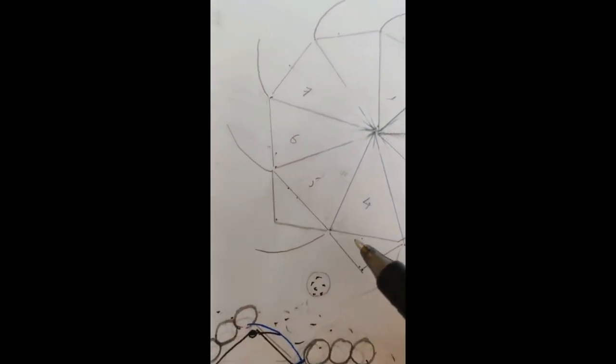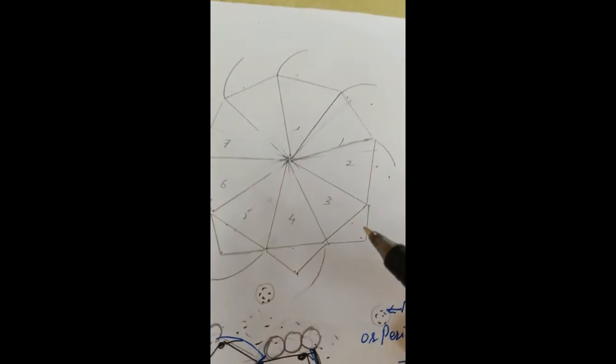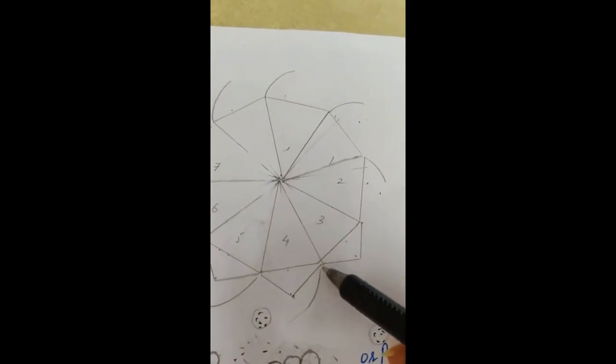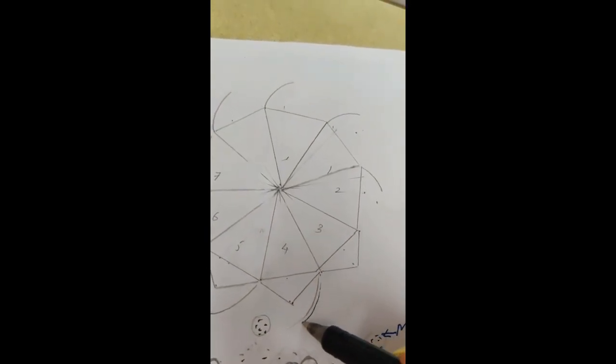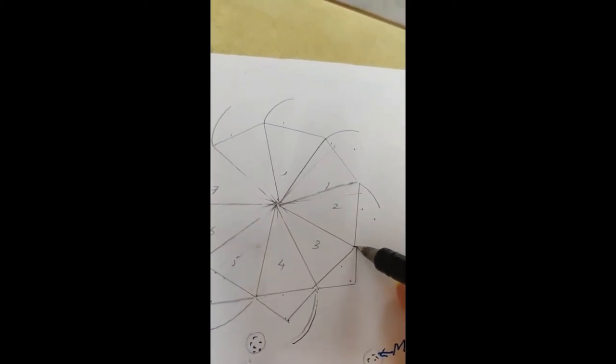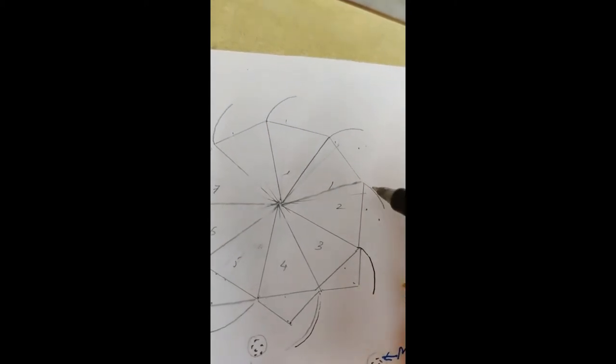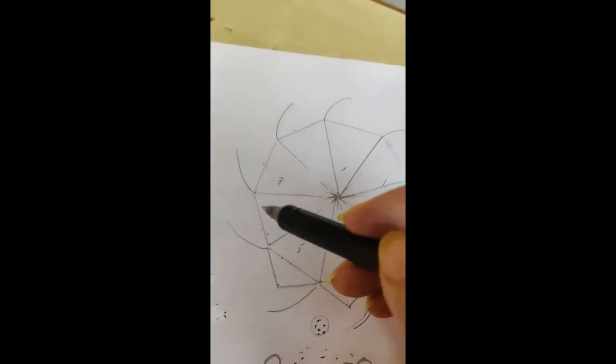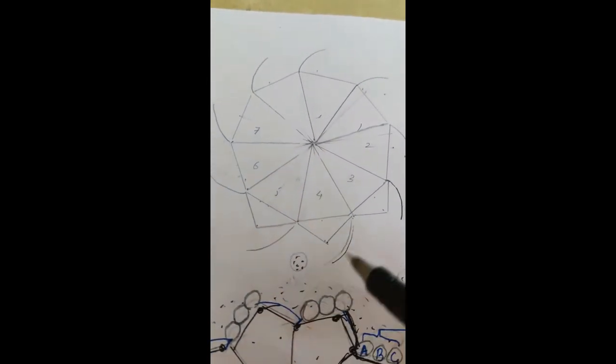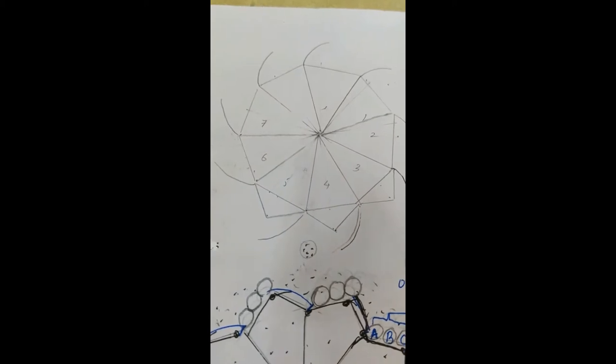So draw all the triangles, and now with a free hand just make these lines. Okay, from these ends make curved lines, small curved lines, but all of them in one direction. So they look like a cartwheel.